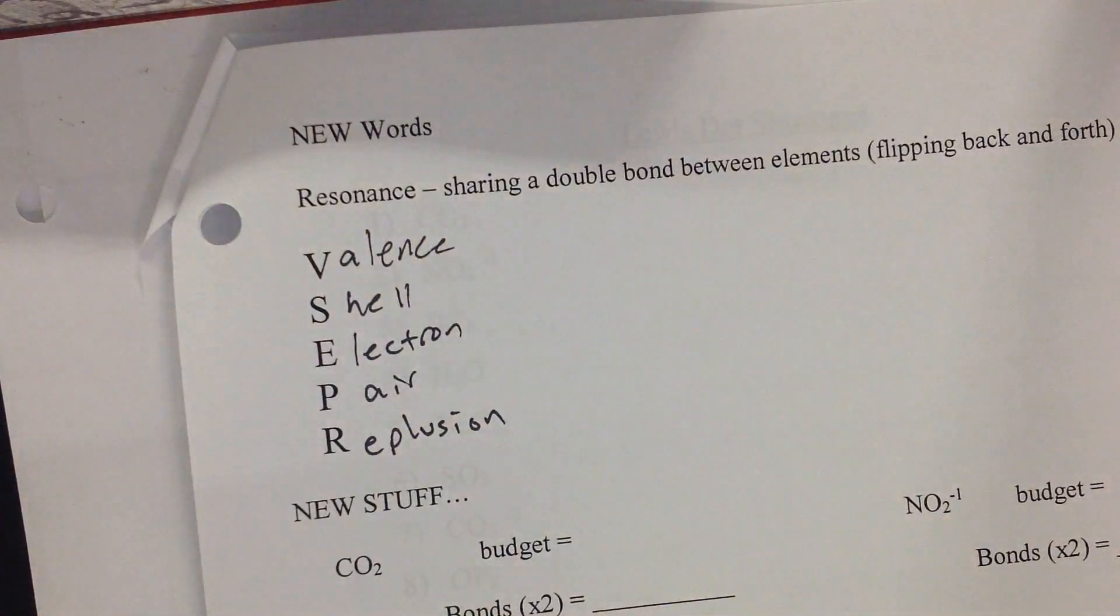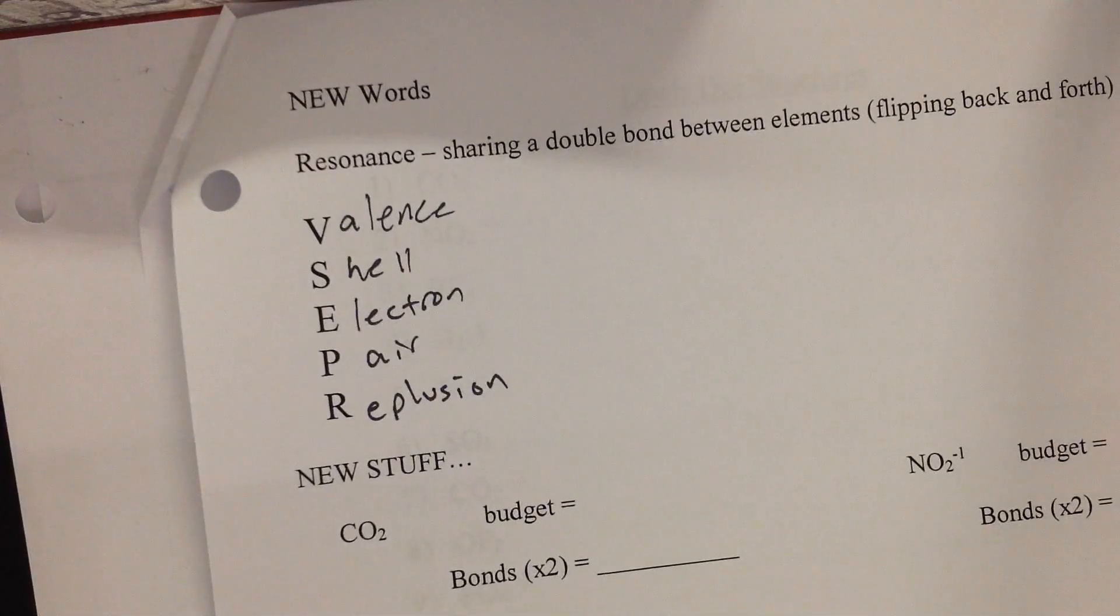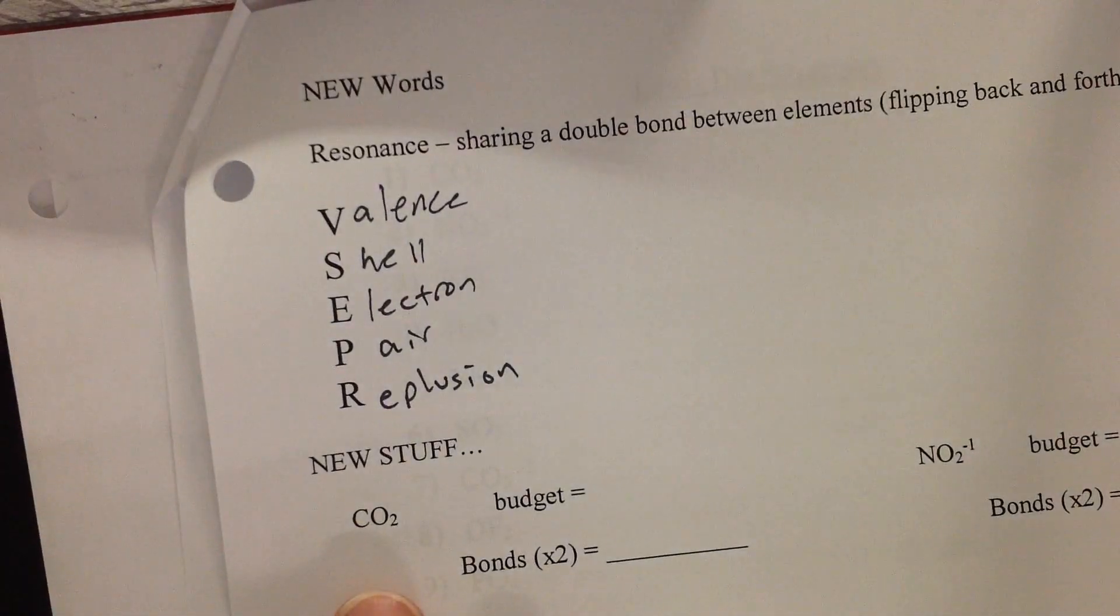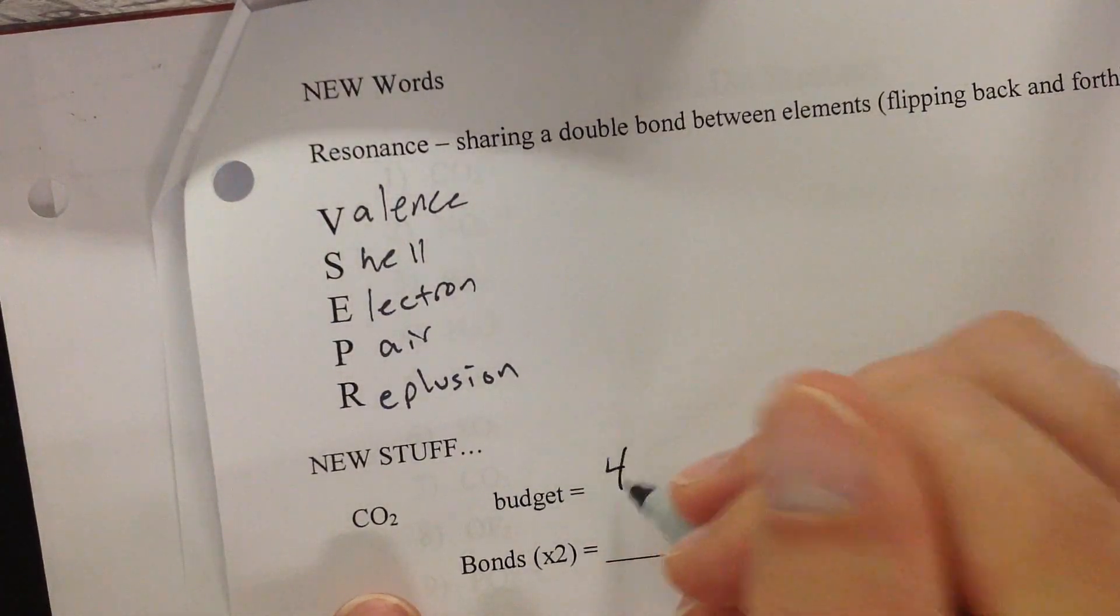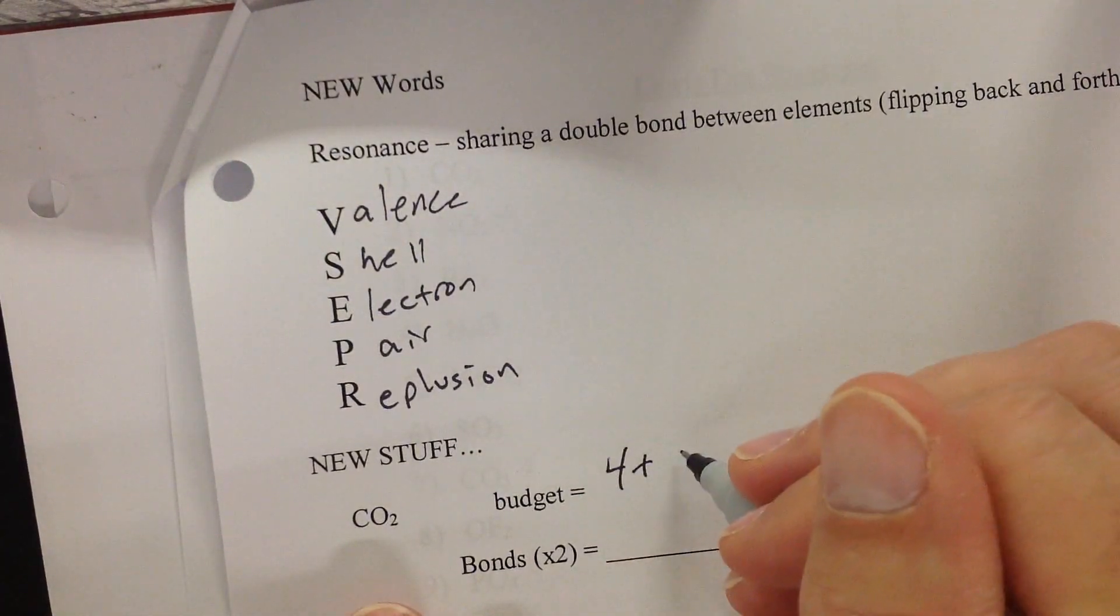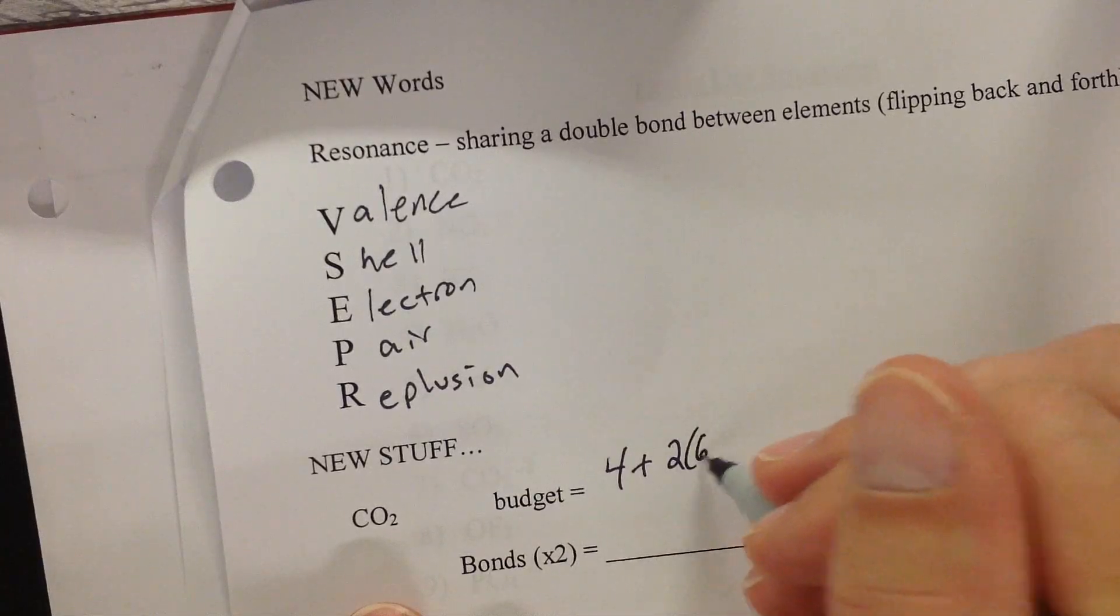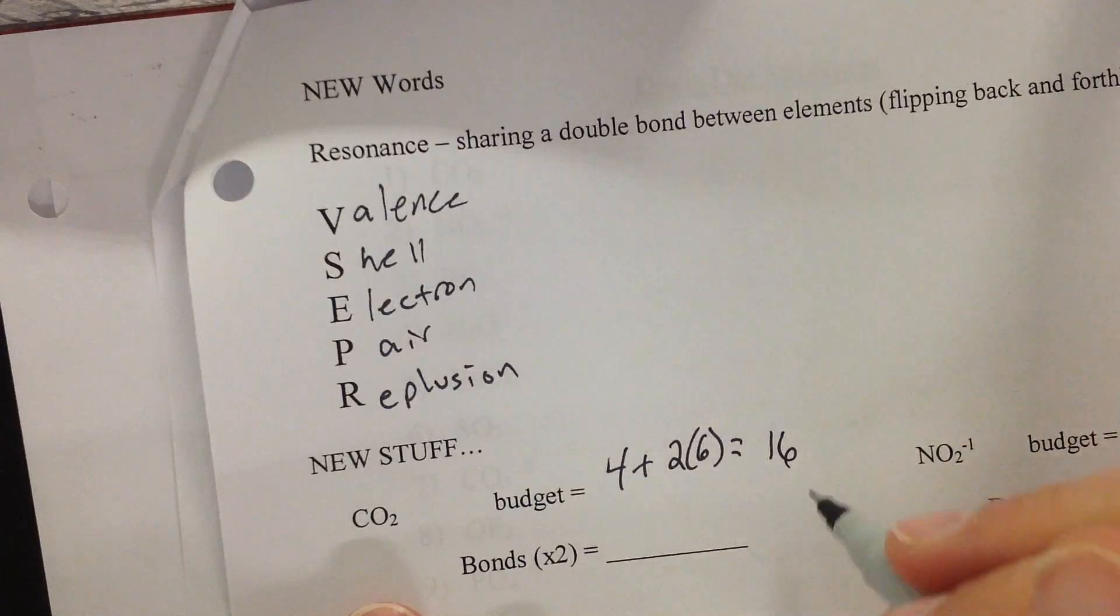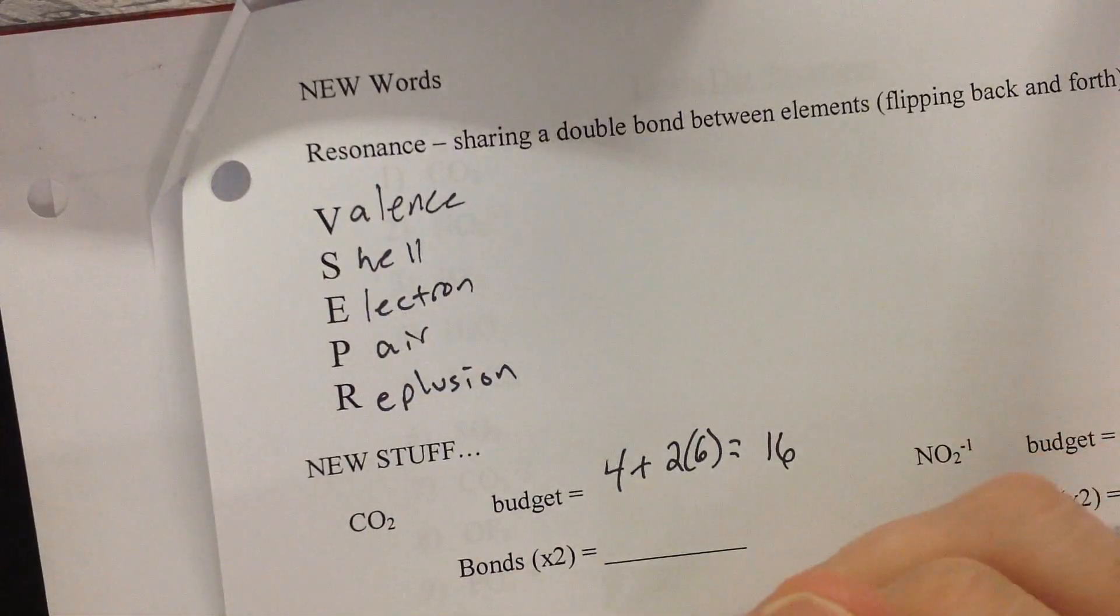So with this knowledge, we can do everything we need to. Let's try CO2 and then we'll try a harder one. So CO2, what's our budget? We count off four for carbon and we count off six for hydrogen, but there's two of them. So through higher math, 12 plus 4 is 16. That's your total budget. Now draw it out.